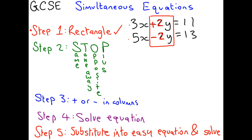Step 2 says STOP. This is an anagram for: same sign means take away, opposite signs mean plus. Can you see we've got a plus and a minus? They're opposite signs, so this step tells us to plus. Don't start getting confused with the signs you've seen before — plus and a minus make a minus and stuff like that. This is different. It's simply a way to remember what to do; it's not the maths rules you've learnt before. So the signs are opposite, so we're going to plus — we put a plus sign between our two equations.